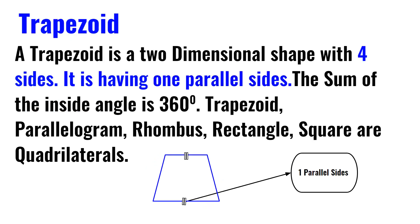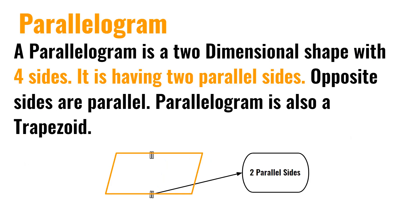A trapezoid is a two-dimensional shape with four sides. It has two parallel sides, and opposite sides are parallel. A parallelogram is also a two-dimensional shape with four sides. It has two parallel sides and opposite sides are parallel.